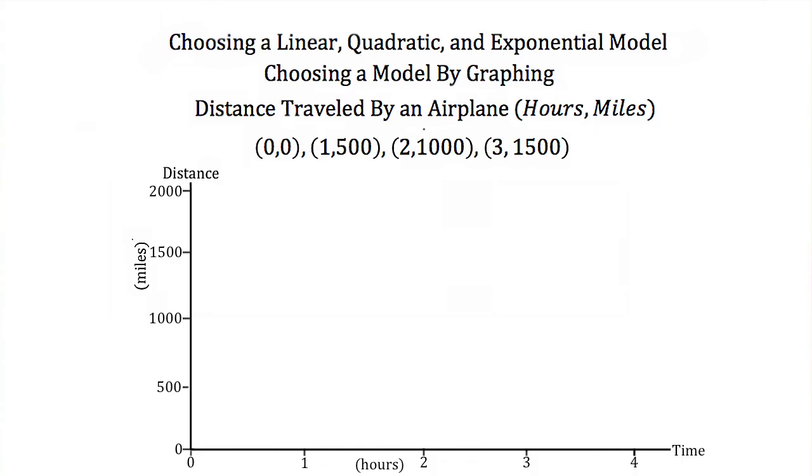So we're going to choose a model by graphing. Here we're given several points: (0,0), (1,500), (2,1000), and (3,1500). Remember that this is the distance traveled by an airplane where our first point is the amount of time the plane's been flying in hours and the second point is the amount of miles traveled. I'm going to plot time on the x-axis and distance on the y-axis and then plot these four points.